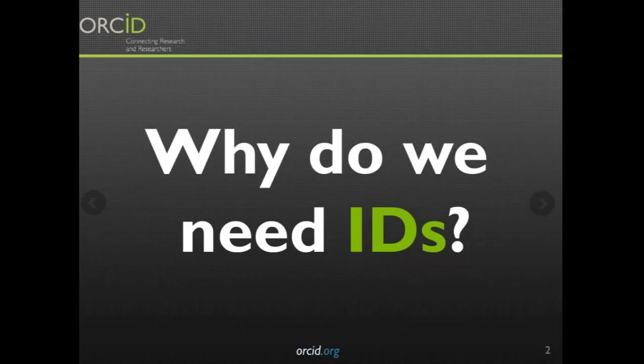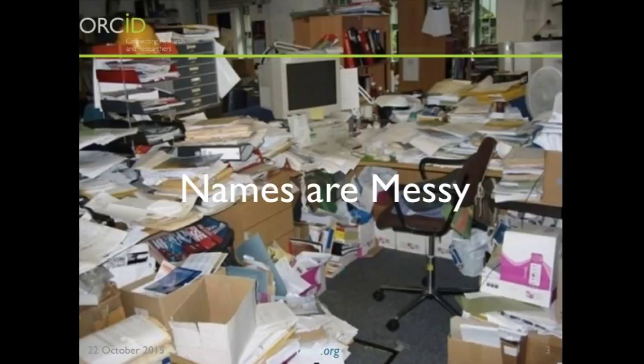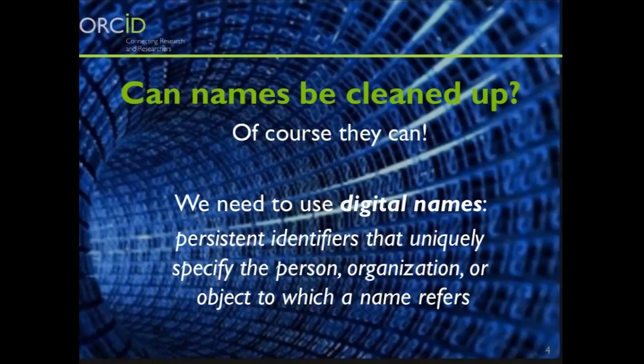So the big question: why do we need identifiers? As everyone on this call probably already knows, names are messy. ORCID deals with names for people, but also we work with other organizations on names for organizations and names for things — papers, books, research activities, et cetera. The big question everyone has is, can names actually be cleaned up? And my answer is, of course they can, if we start using digital names — persistent identifiers that uniquely specify people, places, or things.